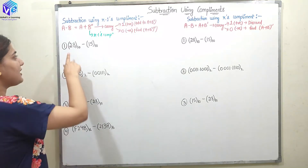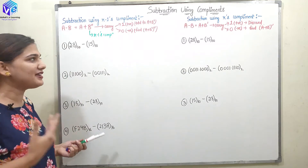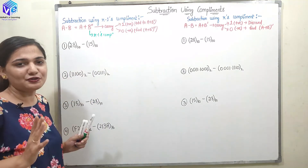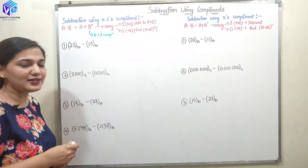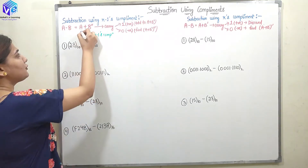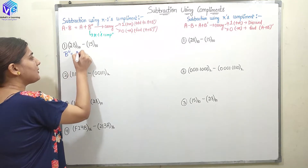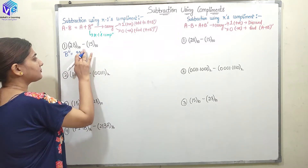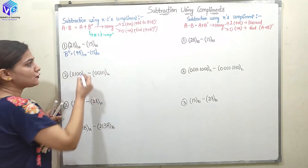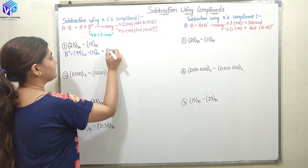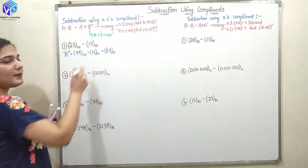The first example is 28 base 10 minus 15 base 10. We know if I subtract 15 from 28, I get 13. But how, with the help of 9's complement, are we going to do that? First, I need to find out A plus B double dash, and for that we need to find out B double dash. It will be equal to 99 base 10 minus 15 base 10, giving us 84 base 10. So B double dash is 84.